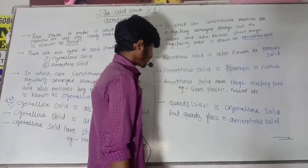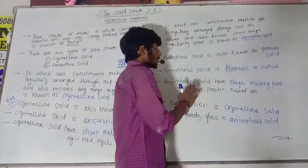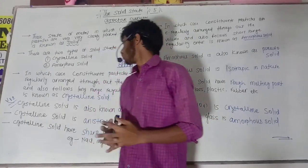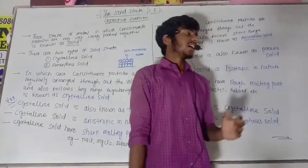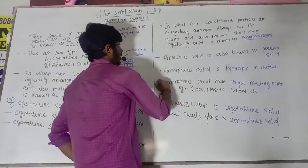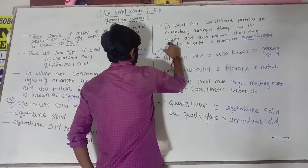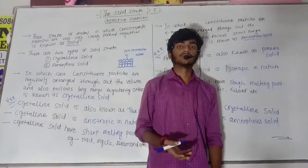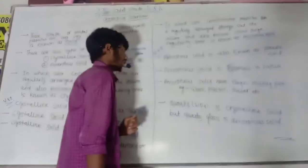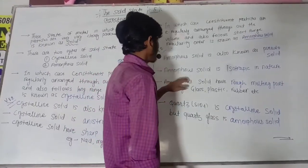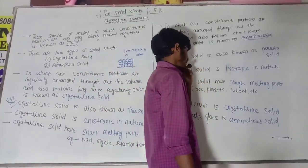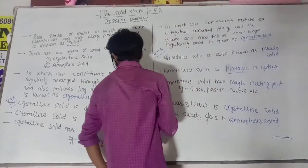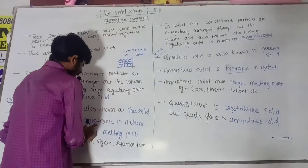Amorphous solid is also known as pseudo solid. The options are: pseudo solid, true solid, both, or none of these. So the correct answer is pseudo solid. Next, amorphous solid is isotropic in nature, whereas crystalline solid is anisotropic.